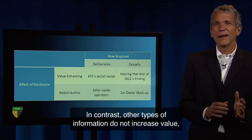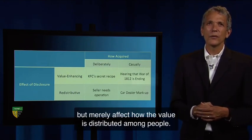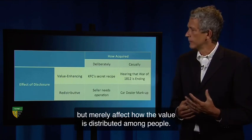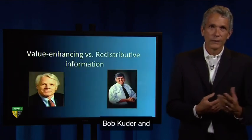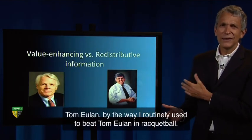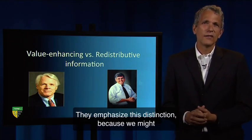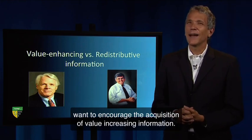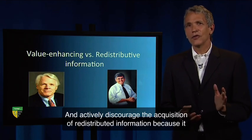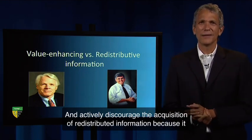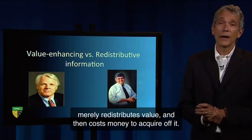In contrast, other types of information do not increase value but merely affect how the value is distributed among people. This would be redistributive information. Bob Cooter and Tom Huland — and I routinely used to beat Tom Huland in racquetball — they emphasize this distinction because we might want to encourage the acquisition of value-increasing information and actively discourage the acquisition of redistributive information, because it merely redistributes value and costs money to acquire.